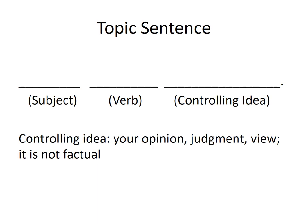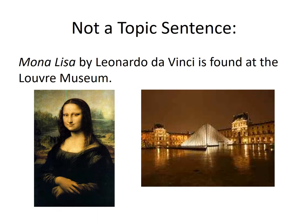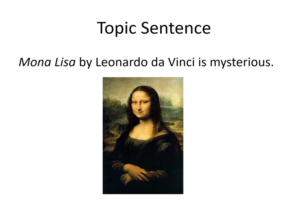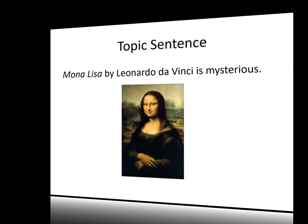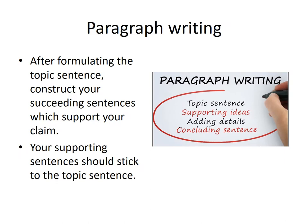And it is not factual. So, if you have this statement — Mona Lisa by Leonardo da Vinci is mysterious — there you have a topic sentence, because the word mysterious is your judgment about the work; it's your opinion. After formulating the topic sentence, construct your succeeding sentences which support your claim, and your supporting sentences should stick to the topic sentence. Do not go out of the topic.